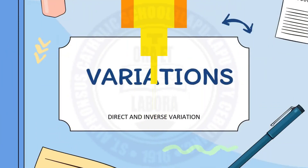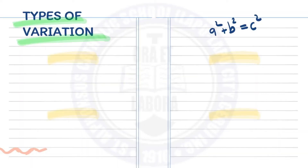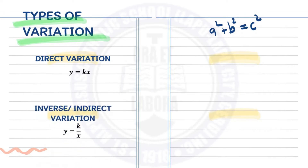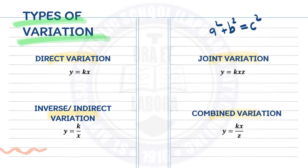In this weekly learning pocket, we will be dealing with variations. There are four types of variations: direct variation, inverse or indirect variation, joint variation, and combined variation.